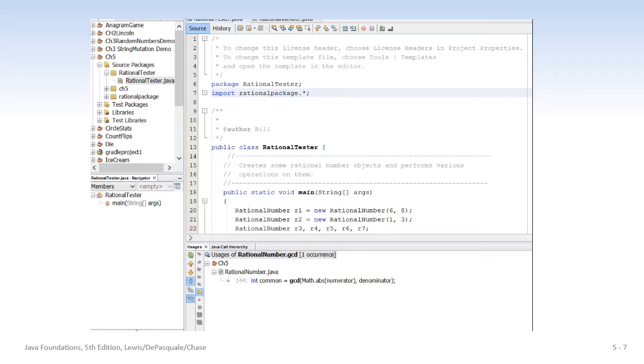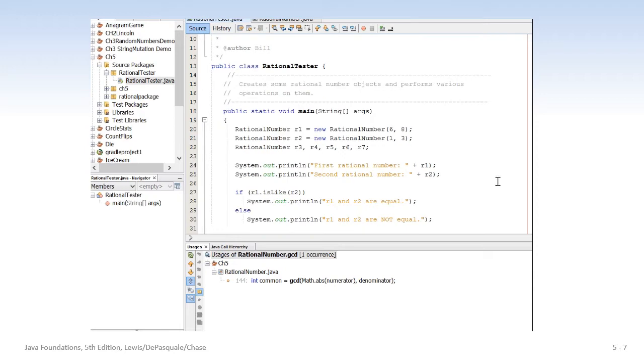Next, we're going to take a look at the driver program. It's called rational tester, and it uses many of the methods in the rational number class. Here we see the constructor. You'll see 6, 8, and that gets reduced before it gets printed. That'll get reduced to 3 over 4 or 3 fourths. And then we're going to declare some other rational numbers that will get assigned different objects as we move forward.